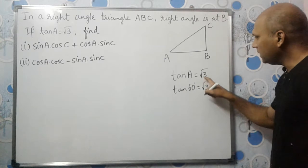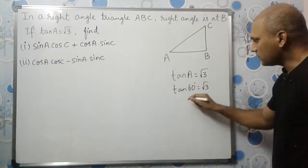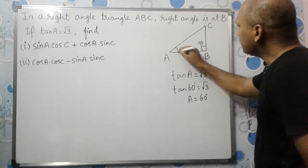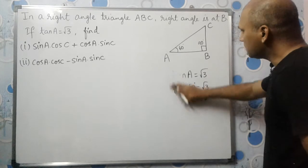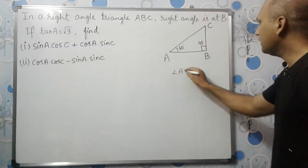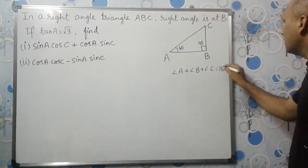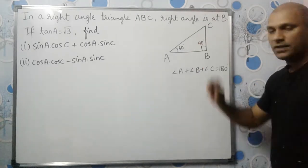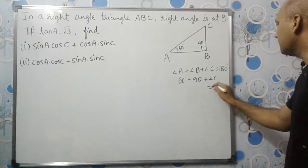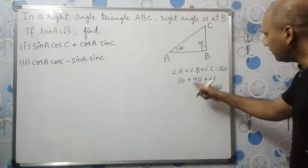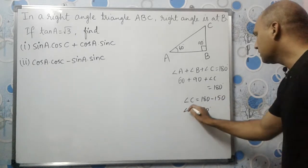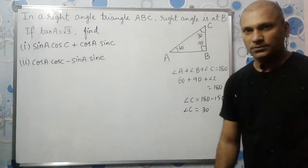Since tan A is root 3, angle A is 60 degrees. We know angle B is 90 degrees. Adding all three angles: angle A plus angle B plus angle C equals 180 degrees. So 60 plus 90 plus angle C equals 180, which gives 180 minus 150, so angle C equals 30 degrees.